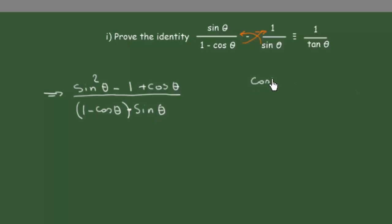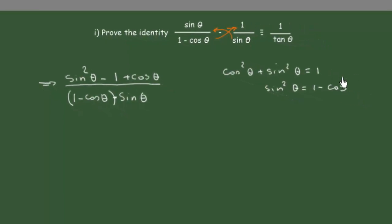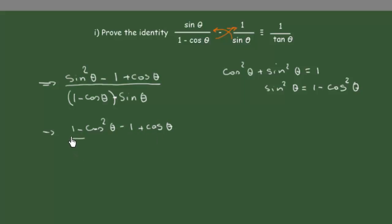We also know that sine squared of theta plus cosine squared of theta equals 1, therefore sine squared of theta equals 1 minus cosine squared of theta. We substitute that in here, giving us 1 minus cosine squared of theta minus 1 plus cosine of theta, all over 1 minus cosine of theta times sine of theta.